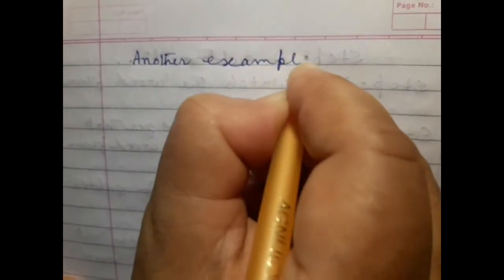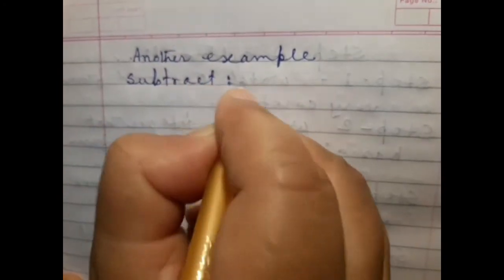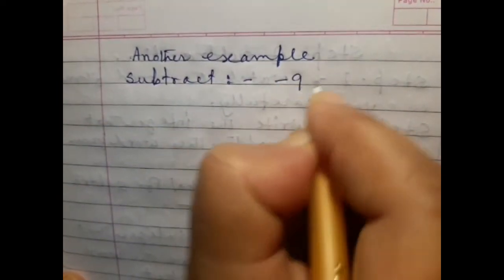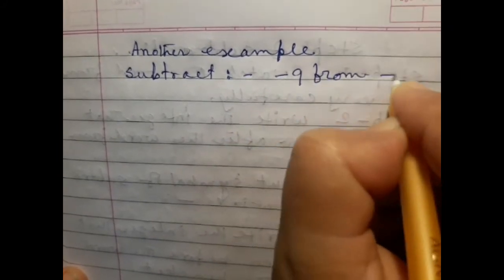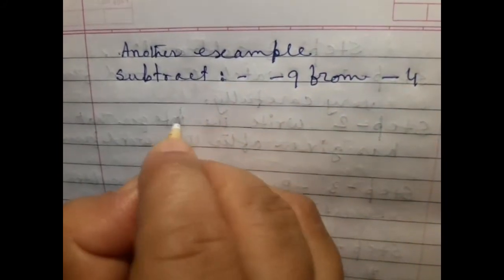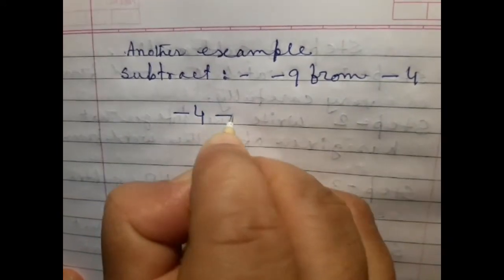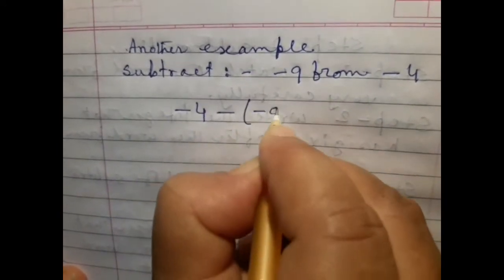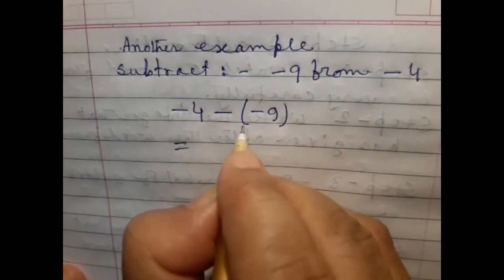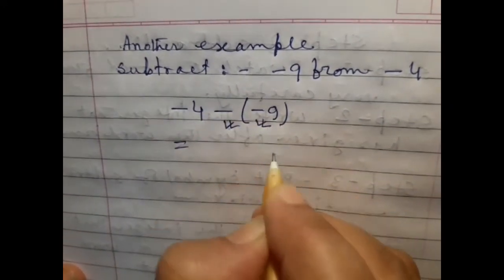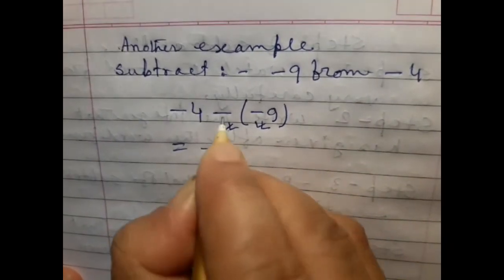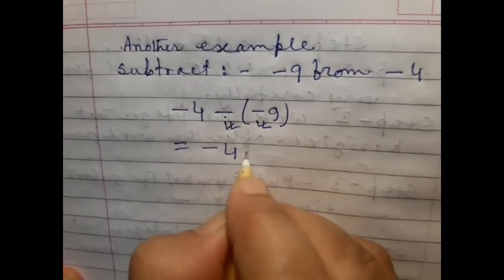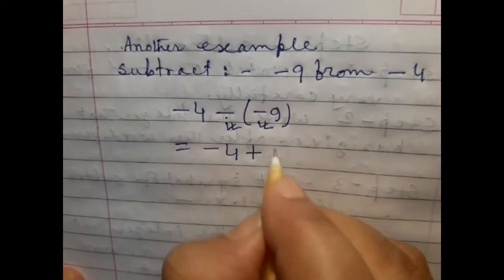Another example. Subtract minus 9 from minus 4. At first we write minus 4 minus bracket minus 9. There is bracket between two symbols. Minus 4 minus and minus. Multiplied: minus minus is plus 9.